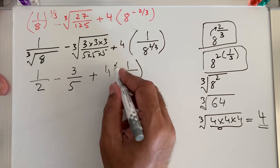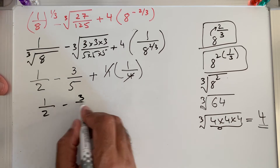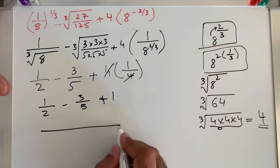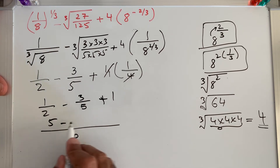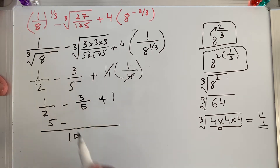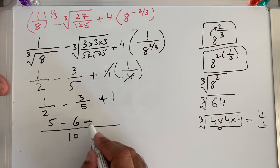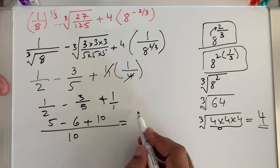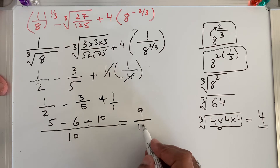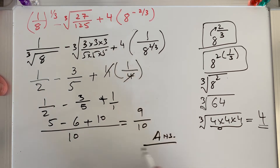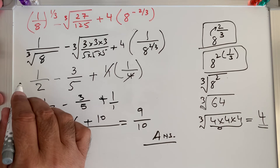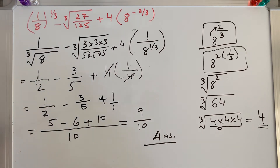So we now have 1/2 − 3/5 + 1. Finding the LCM of 2, 5, and 1, which is 10: this gives 5/10 − 6/10 + 10/10. Adding these: 5 − 6 + 10 = 9, so the answer is 9 over 10. You can also enter all the values in the calculator simultaneously and you will get the same answer: 9 over 10.